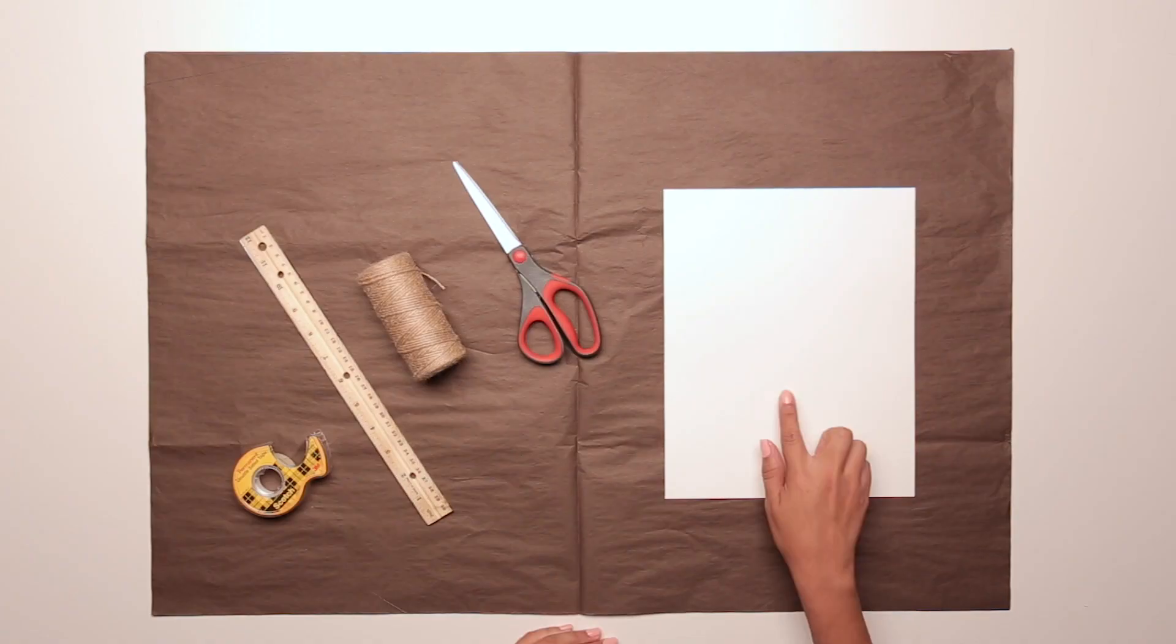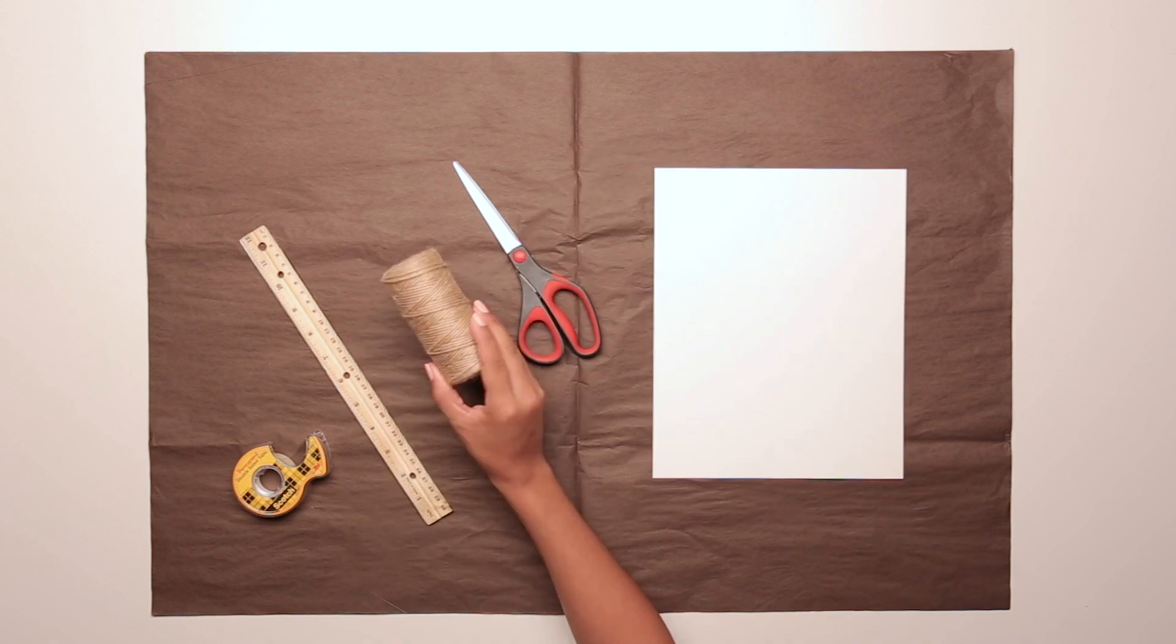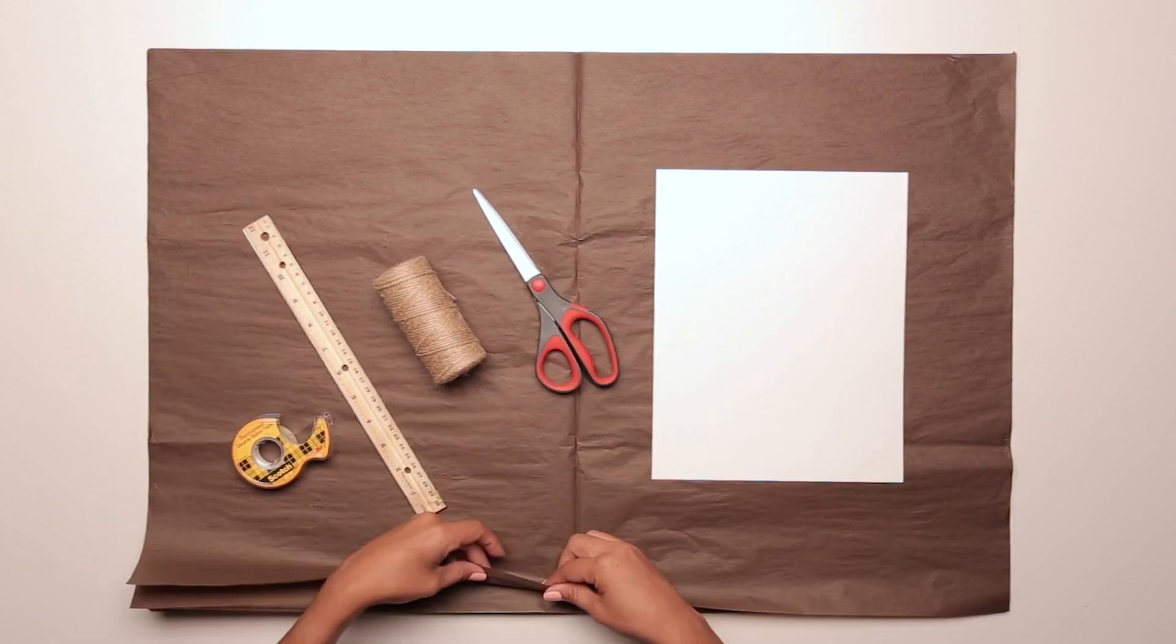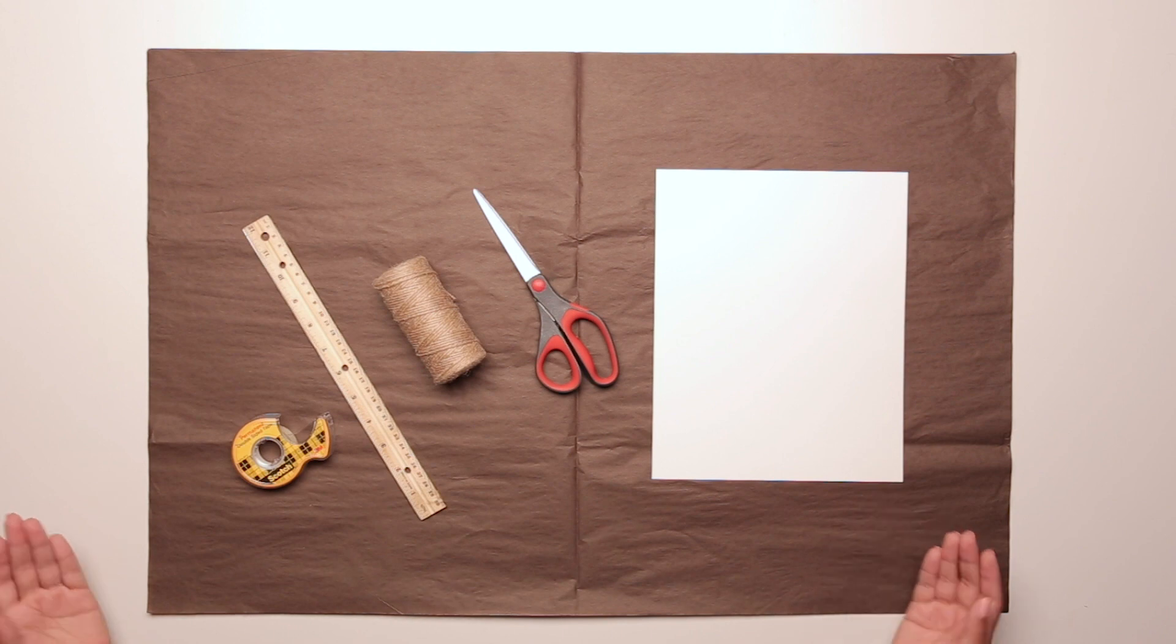For this you'll need one sheet of white cardstock, a roll of twine or string, double-sided tape, scissors, ruler, and 10 sheets of 20 by 30 inch brown tissue paper.